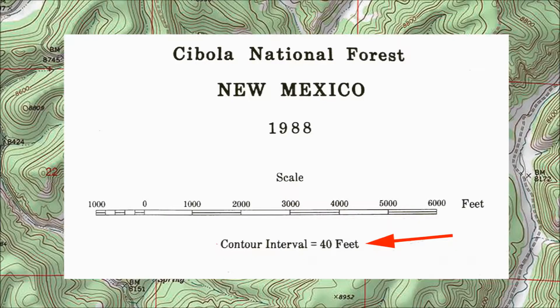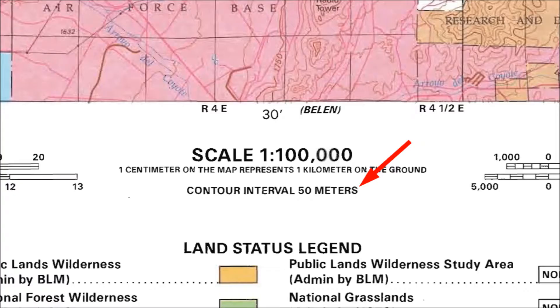You need to be aware that the contour interval can vary from map to map. Here's the contour interval statement from a different map where the interval is 40 feet. Most of the world's maps actually have contour intervals based on meters not feet. On this US government map of the Albuquerque area the contour interval is 50 meters which is 164 feet.